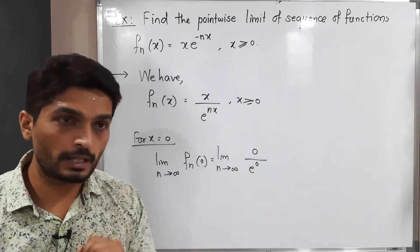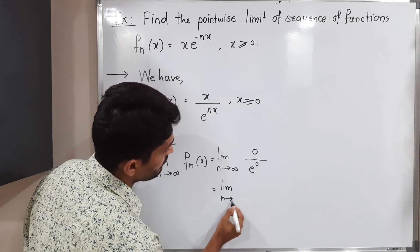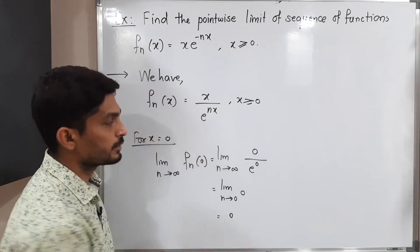You know that e^0 = 1, so the denominator is 1 and numerator is 0. Obviously we will have 0. If you apply the limit, you will have 0. Since 0 is a constant, you will have the same.